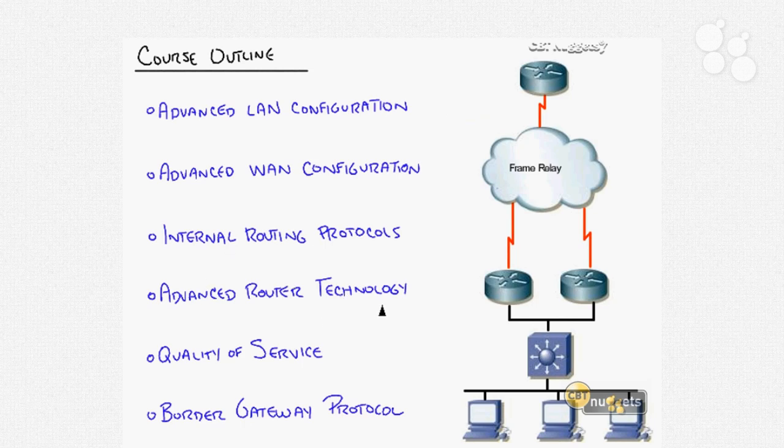We then move into advanced router technology — the umbrella for all technology not directly related to routing protocols, such as HSRP, network address translation (NAT), voice over IP, multicast, access lists (time-based, named, and dynamic). It's essentially all the technology that fits under the router umbrella but doesn't deal directly with the routing process itself — the whiz-bang features you can add on top.